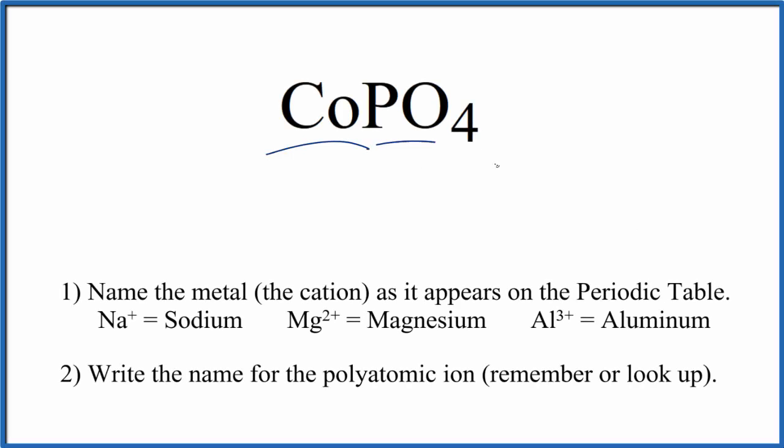To write the name for CoPO4, we first need to recognize that the CO, cobalt, is a transition metal, and PO4, this is a polyatomic ion. It's a group of non-metals. So we're going to use these rules here to write the name for CoPO4.